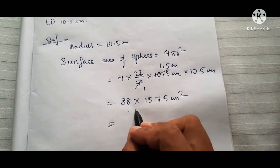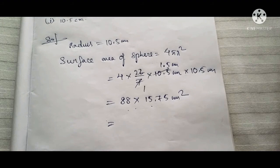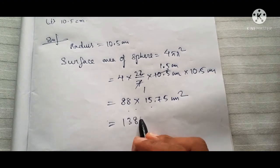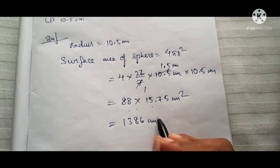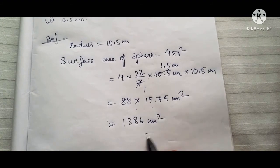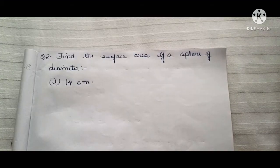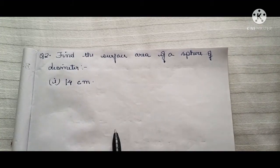88 into 15.75 will be 1386 centimeters squared. So now let's go to question number two: find the surface area of a sphere of diameter 14 centimeters.